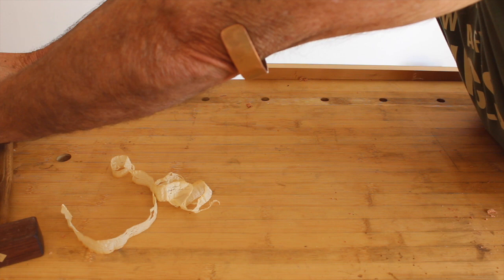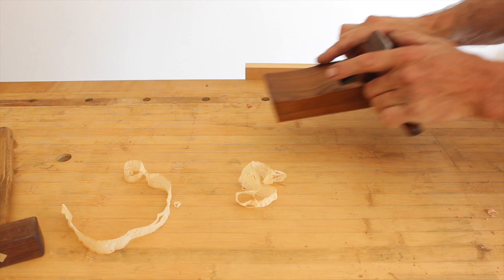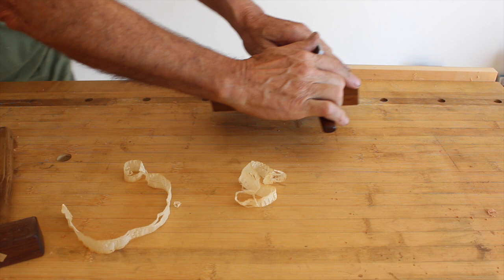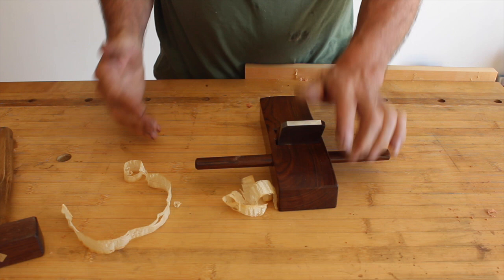You can stand at one end, start your cut and reach as far as you can, then stop so you have a line across your bench. Then you go down the other end of the bench, overlap that cut and pull it through, so at all times you're always...